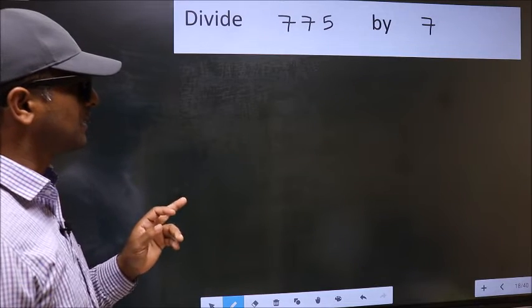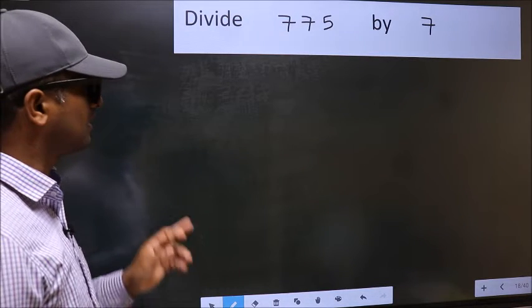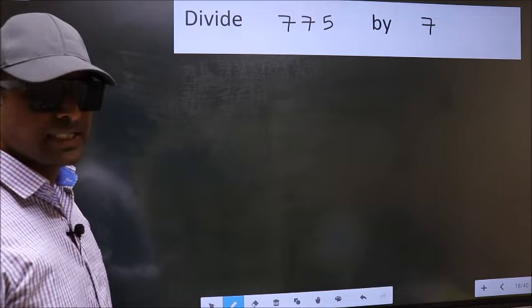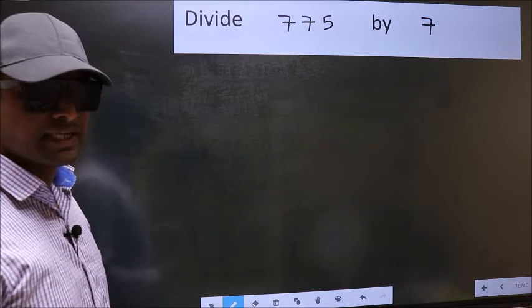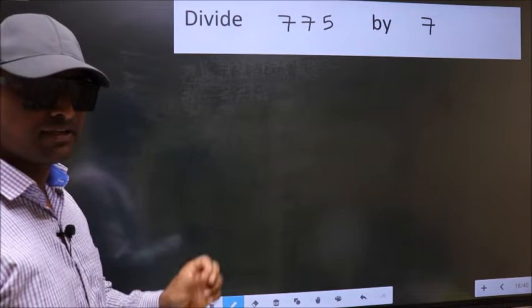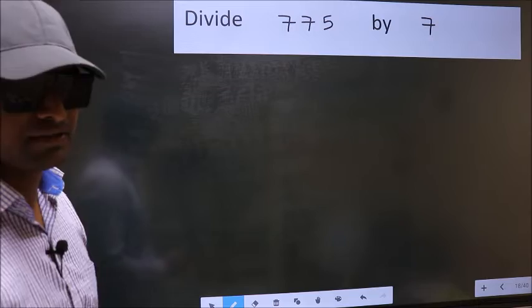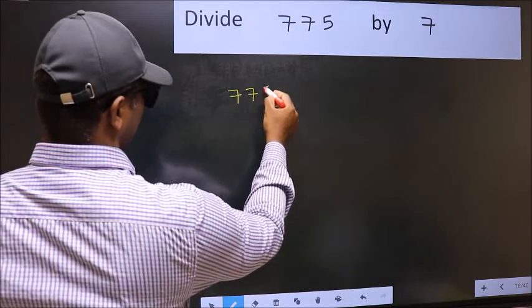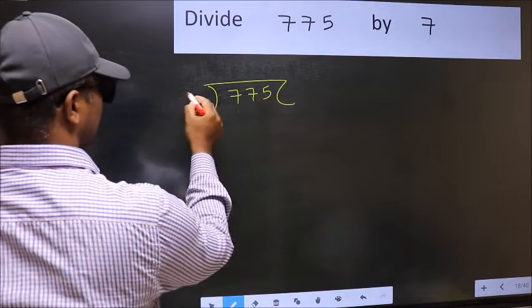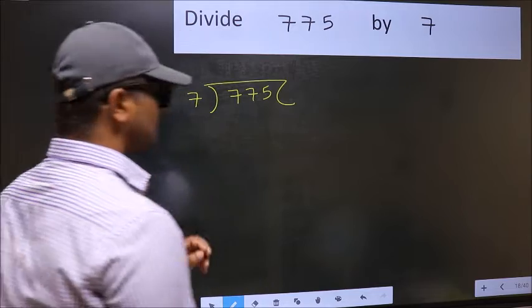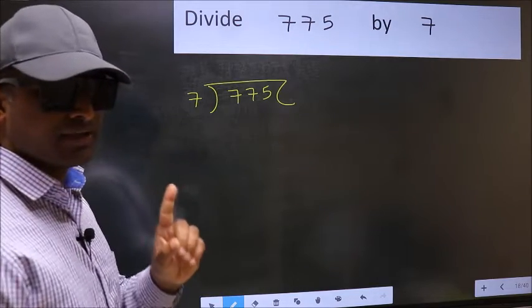Divide 775 by 7. While doing this division, many do this mistake. What is the mistake that they do? I will let you know. But before that, we should frame it in this way. 775 and 7 here. This is your step 1.